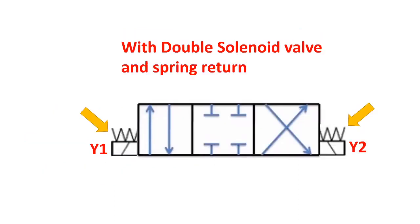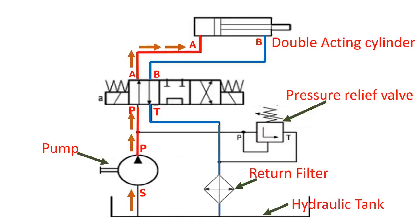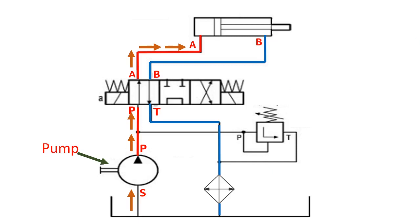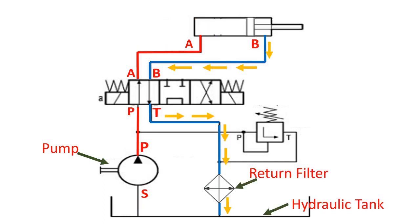Let's start with the piston extending. When solenoid one is activated by an electrical signal, the pressurized oil generated by the pump passes through the normally open ports of the directional valve and enters port A of the cylinder. The piston moves from left to right. The oil on the piston-side port B automatically returns to the oil tank via port B of the cylinder, through the directional valve, through the filter, and back to the oil tank.